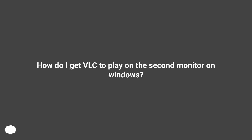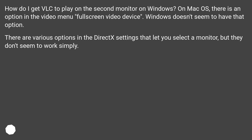How do I get VLC to play on the second monitor on Windows? On MacOS, there is an option in the video menu: Full Screen Video Device. Windows doesn't seem to have that option. There are various options in the DirectX settings that let you select a monitor, but they don't seem to work simply.